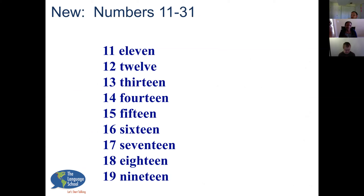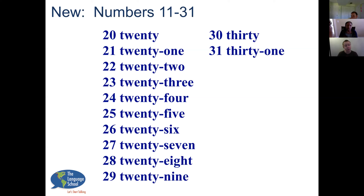Very good. Now numbers up to 31 for talking about dates. Repeat: 11, 12, 13, 14, 15, 16, 17, 18, 19, 20, 21, 22, 23, 24, 25, 26, 27, 28, 29, 30, 31. Excellent, very good.